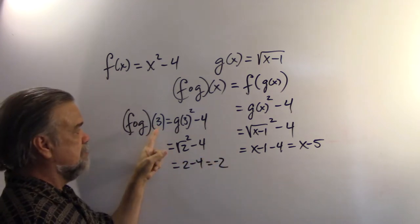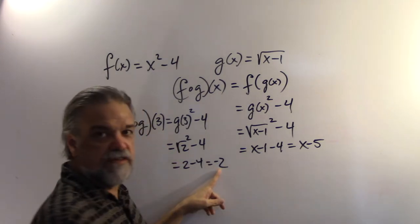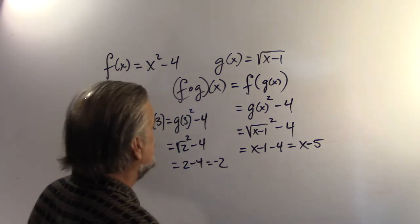So f of g of 3 equals negative 2. And sure enough, 3 minus 5 is negative 2. This all looks fine so far.